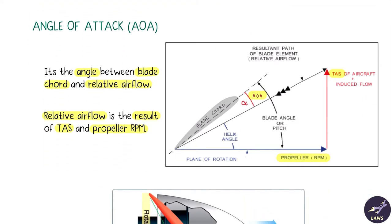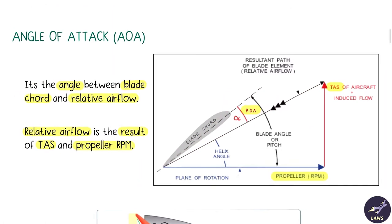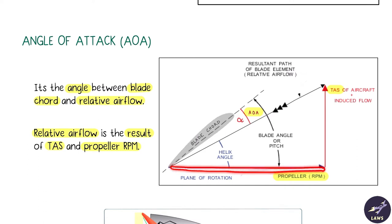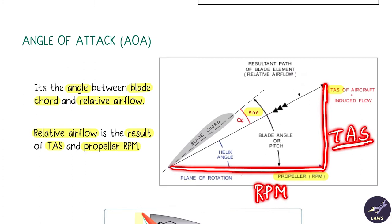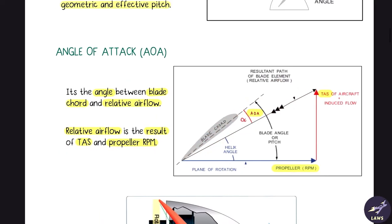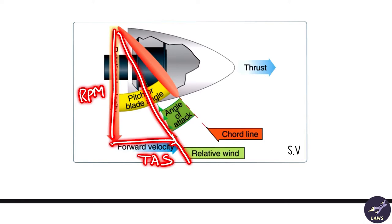The angle of attack of the propeller is the angle between the blade chord and the relative airflow. This relative airflow is a product of the propeller RPM and the TAS of the aircraft — RPM and TAS together give the relative airflow. Between the relative airflow and the chord line, you have the angle of attack, alpha.